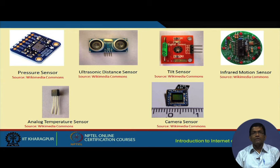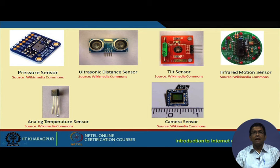Here are pictures of a few other sensors: a pressure sensor, an ultrasonic distance sensor, a tilt sensor, an infrared motion sensor, a camera sensor, and an analog temperature sensor. The analog temperature sensor has three pins — one for plus five volts, one for ground (zero volts), and the middle pin is typically used for the output.